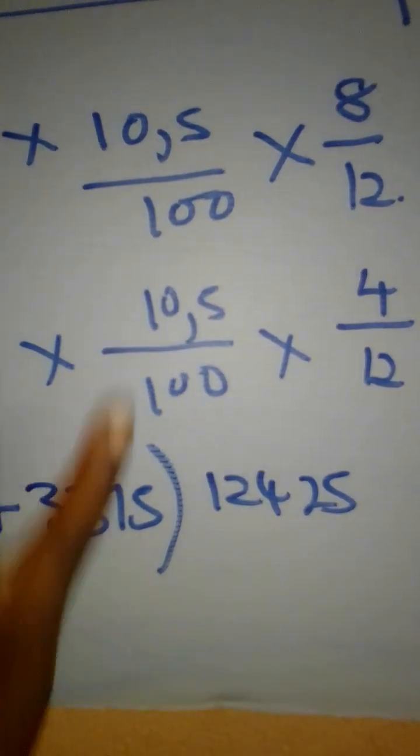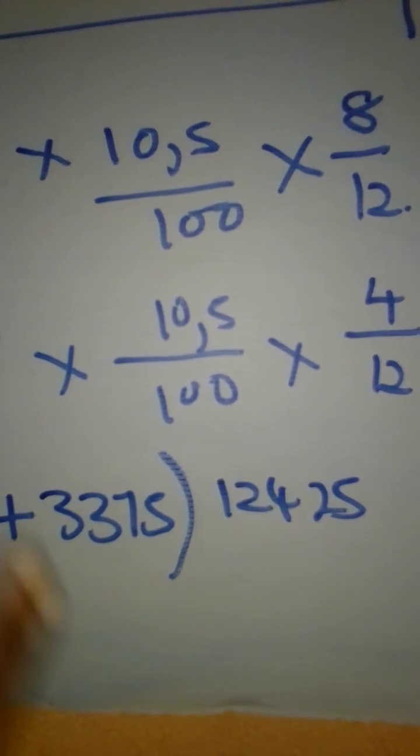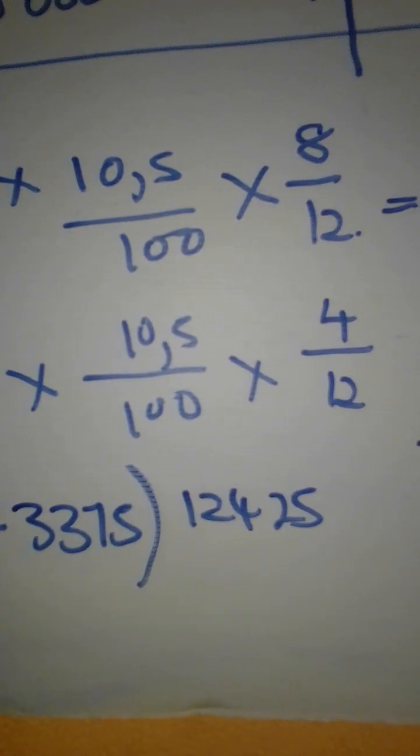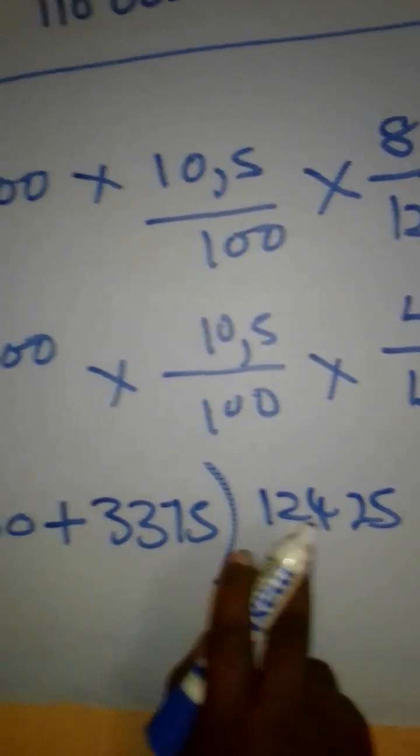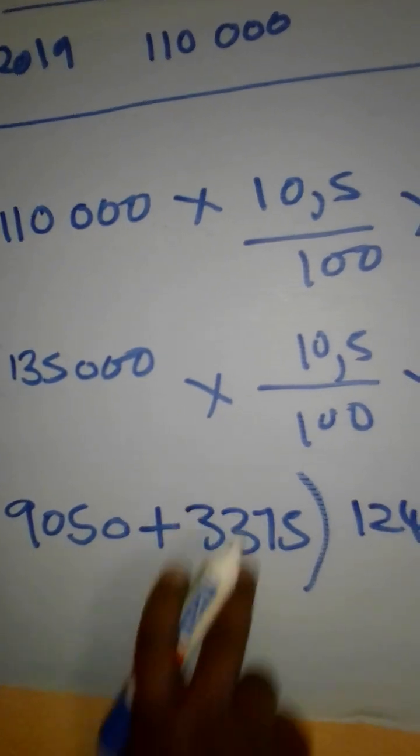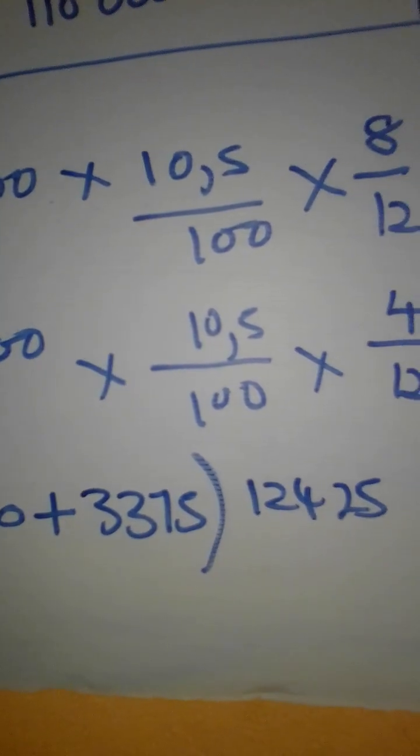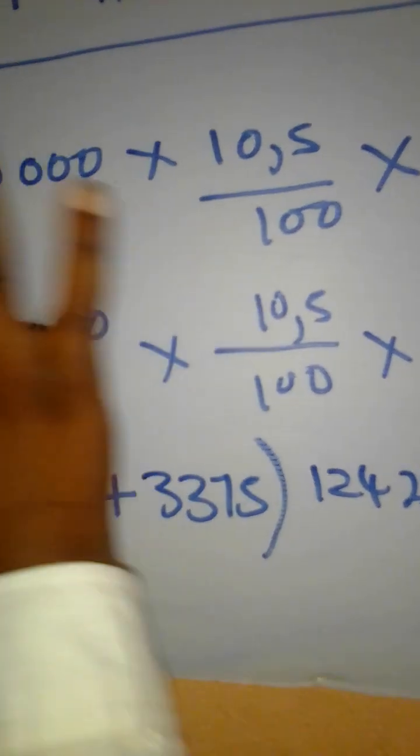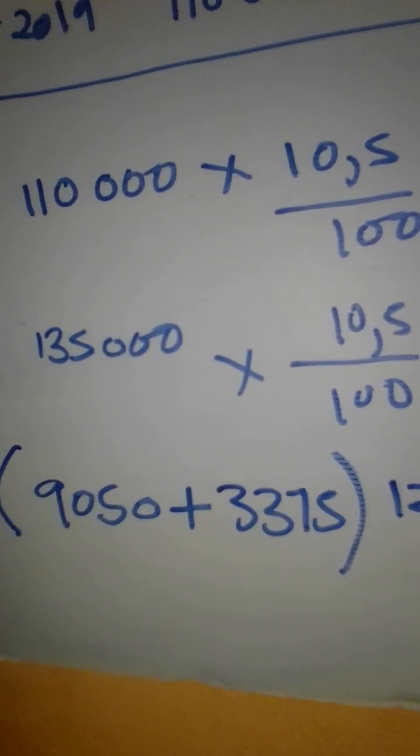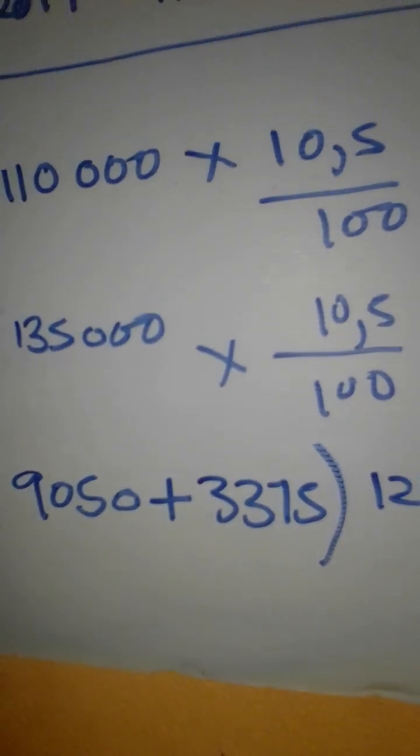That is all for adjustment number F, the interest on fixed deposit. So when you go to your income statement, you are supposed to record like the way I have shown here, $12,425. Remember, showing it like this, you are also going to get marks for this calculation that we have shown in brackets. So this is F. Now we are moving on to adjustment number G.